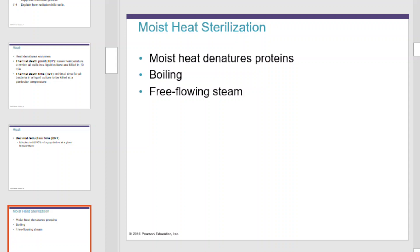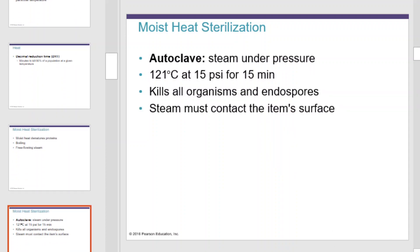Moist heat sterilization denatures proteins. Boiling or using free-flowing steam can create moist heat and is often faster and more effective than dry heat. The autoclave is probably the most effective moist heat sterilization tool we have. It produces steam under pressure — temperatures of 121 degrees Celsius at 15 psi for 15 minutes can kill all organisms and endospores. However, steam must contact the item's surface.